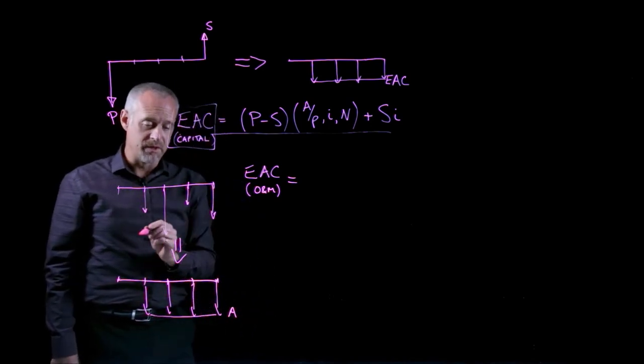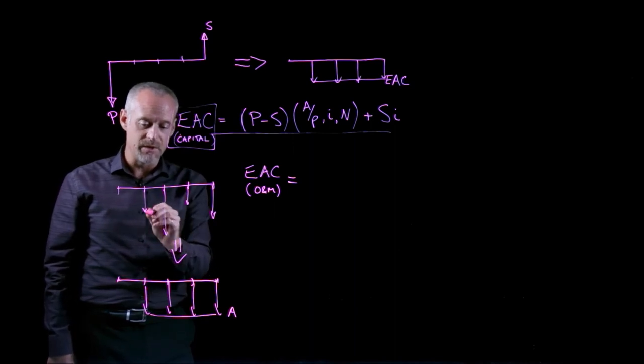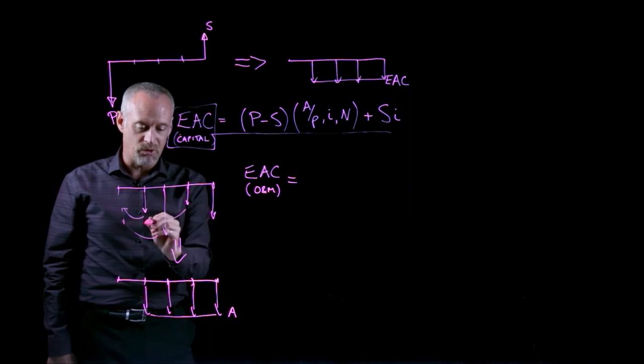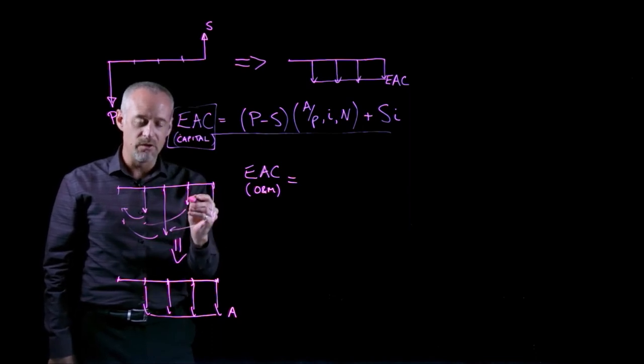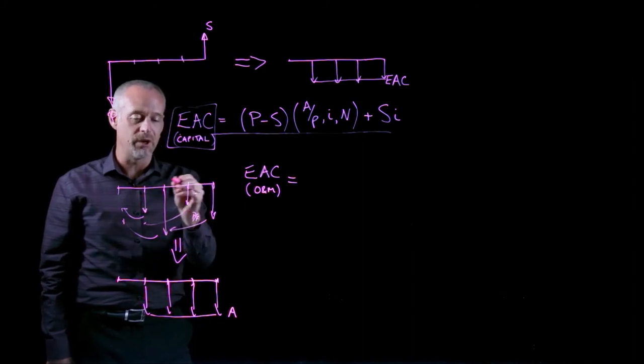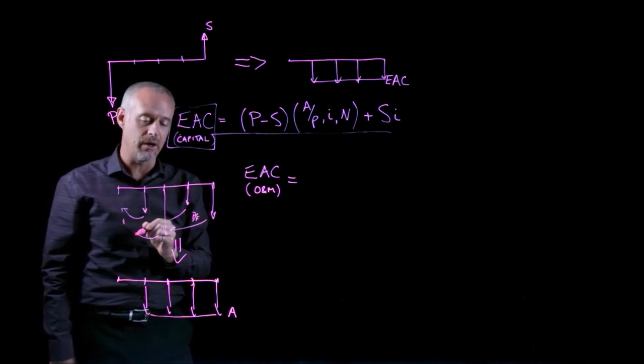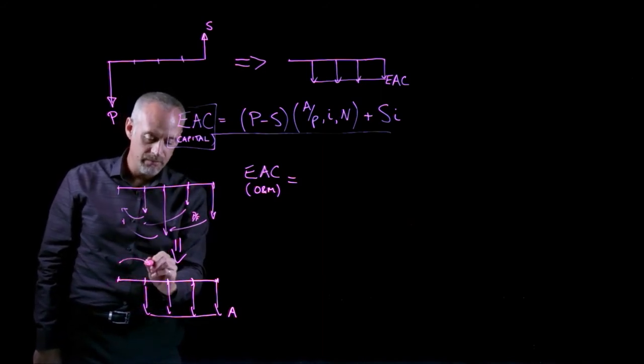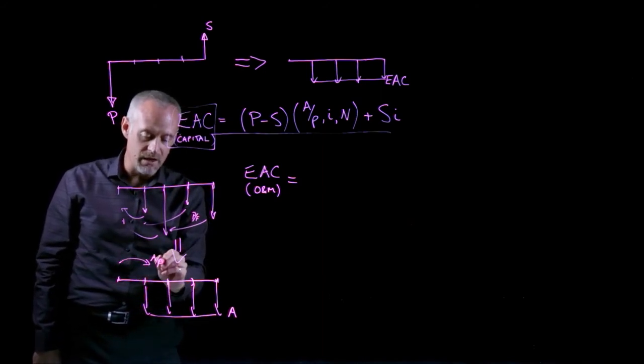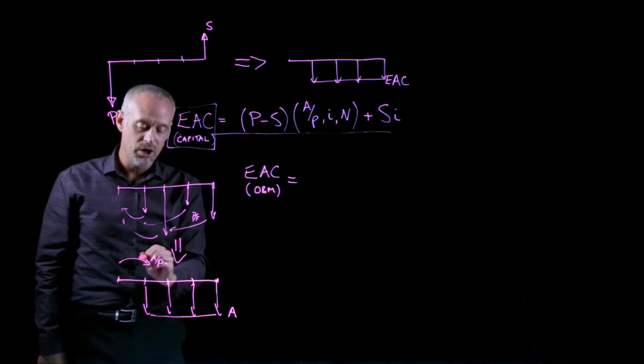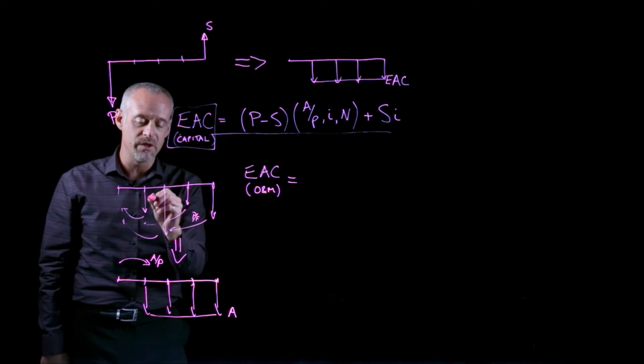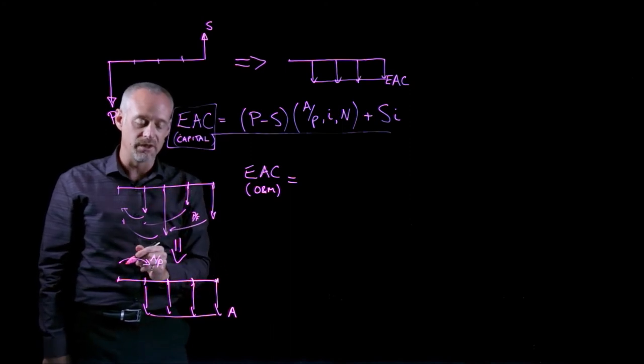So what I'm trying to do here is take these costs and convert them to an equivalent annual cost. Most of the time what I end up doing is taking these costs, bringing them all back to the present, and I would do that using a P given F factor for each of these, depending on how far out in time they are. And then once I've done that, I would use an A given P factor to convert the sum of all of these present values of these payments into an equivalent annual cost.